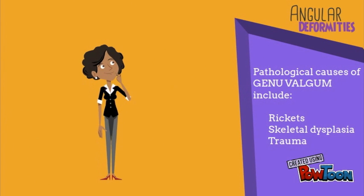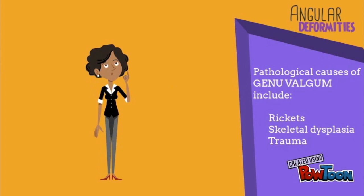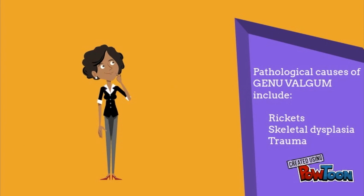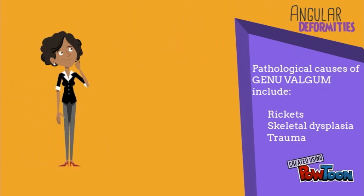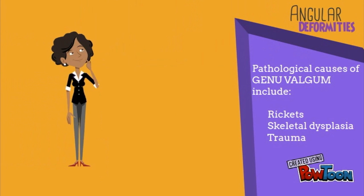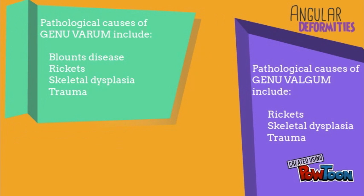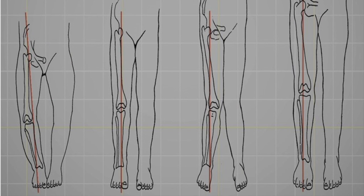Pathological causes of genu valgum include rickets, skeletal dysplasia, and trauma. Pathological causes of genu varum include Blount's disease, rickets, skeletal dysplasia, and trauma. To differentiate between the two, one has to understand the normal physiological development of the lower limb.